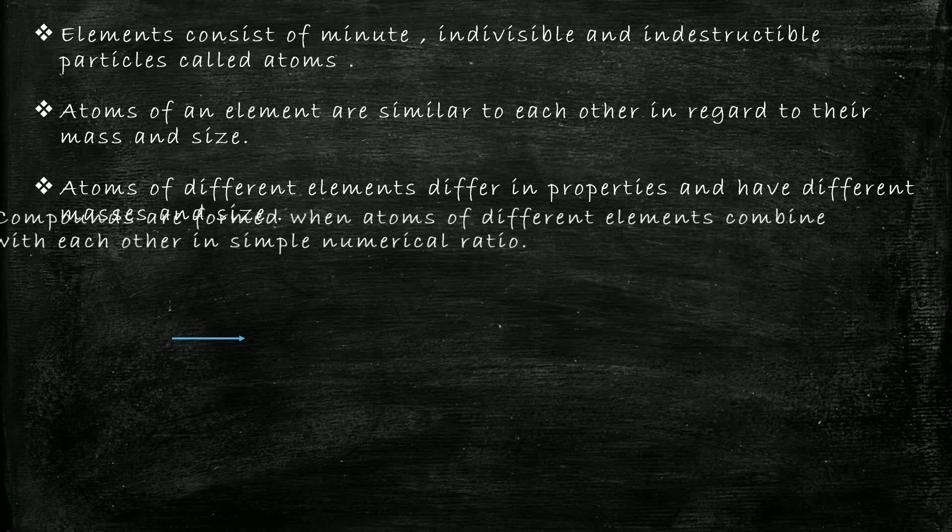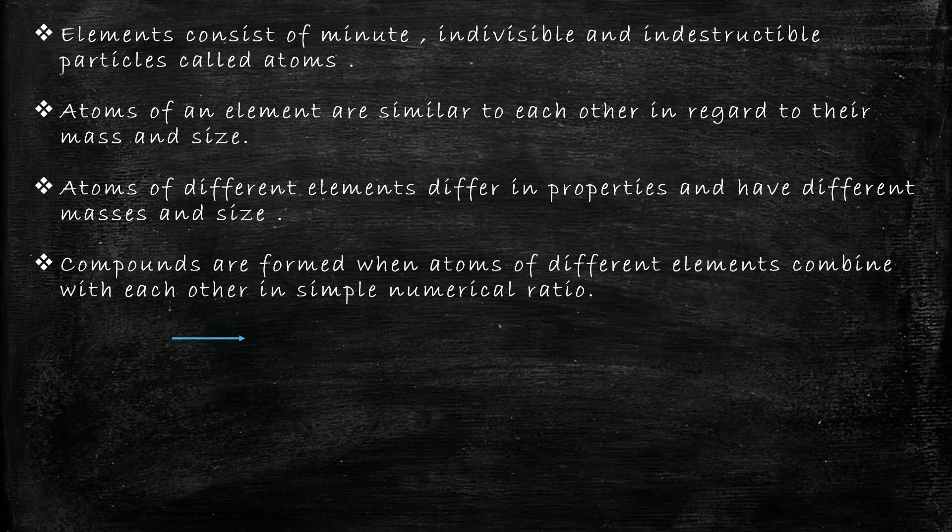According to the fourth point, compounds are formed when atoms of different elements combine with each other in simple numerical ratio. Let's understand this with an equation. In this reaction, one sodium atom is combining with one chlorine atom and they are forming one sodium chloride. So according to this point, compounds are formed when atoms of different elements—what are the different elements over here? Sodium and chlorine—combine with each other in simple numerical ratio.